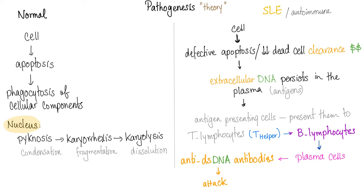The pathophysiology of anti-double-stranded DNA is a theory. Normally a cell, at the end of its life, undergoes apoptosis — cell suicide — leading to phagocytosis of all cellular components. For the nucleus, it undergoes pyknosis, karyorrhexis, and karyolysis: condensation, fragmentation, and dissolution of the nucleus.